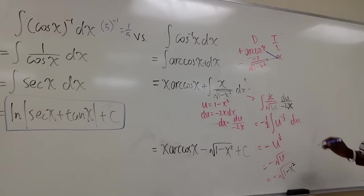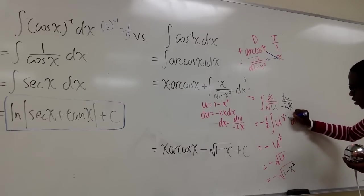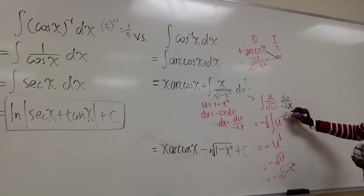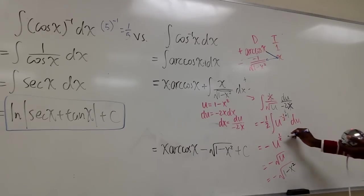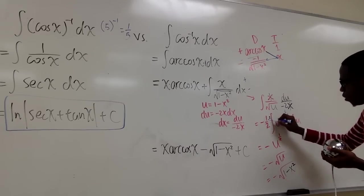And how do we take the integral of this? We just add 1 and divide by that number. So we're going to have u to the half. The half comes from negative half plus 1, which is half. And we divide by half, which is pretty much the same as multiplying by 2 over 1.